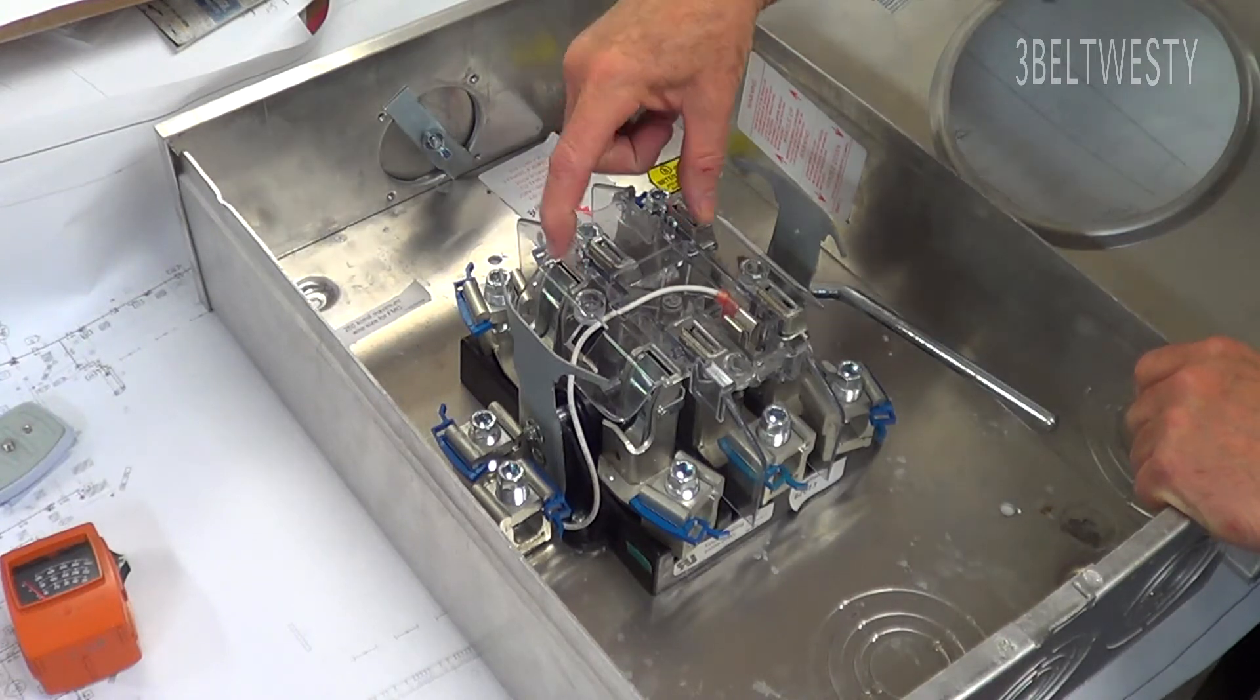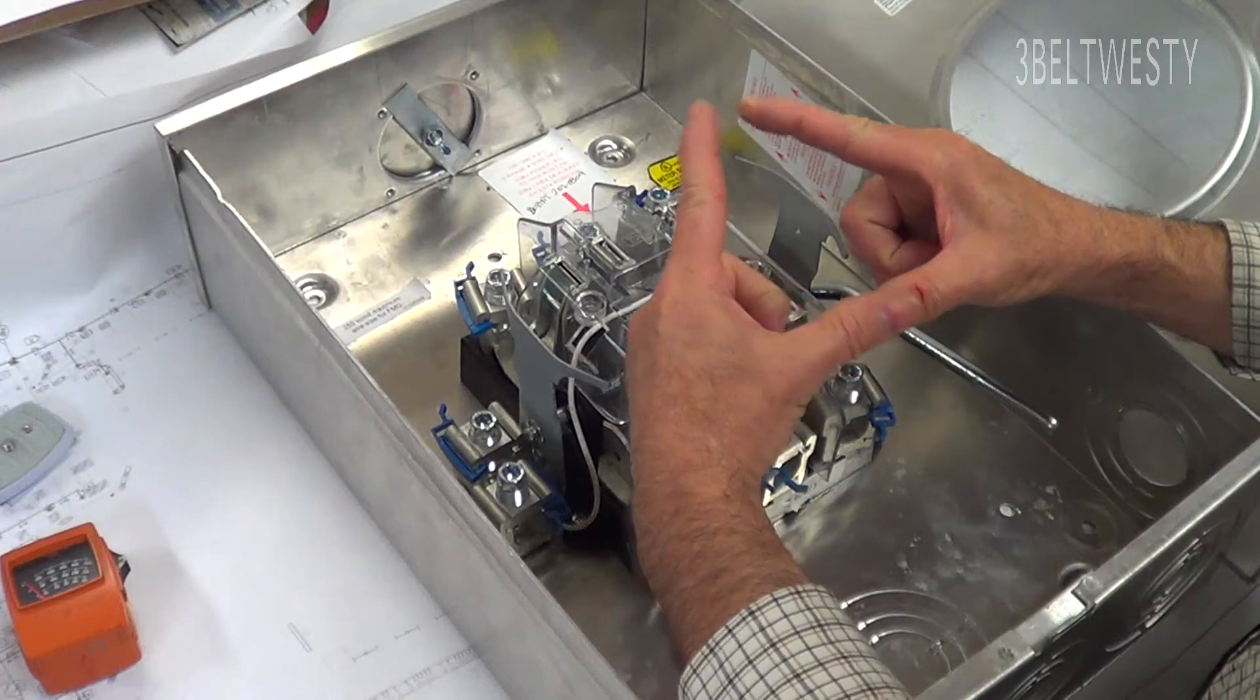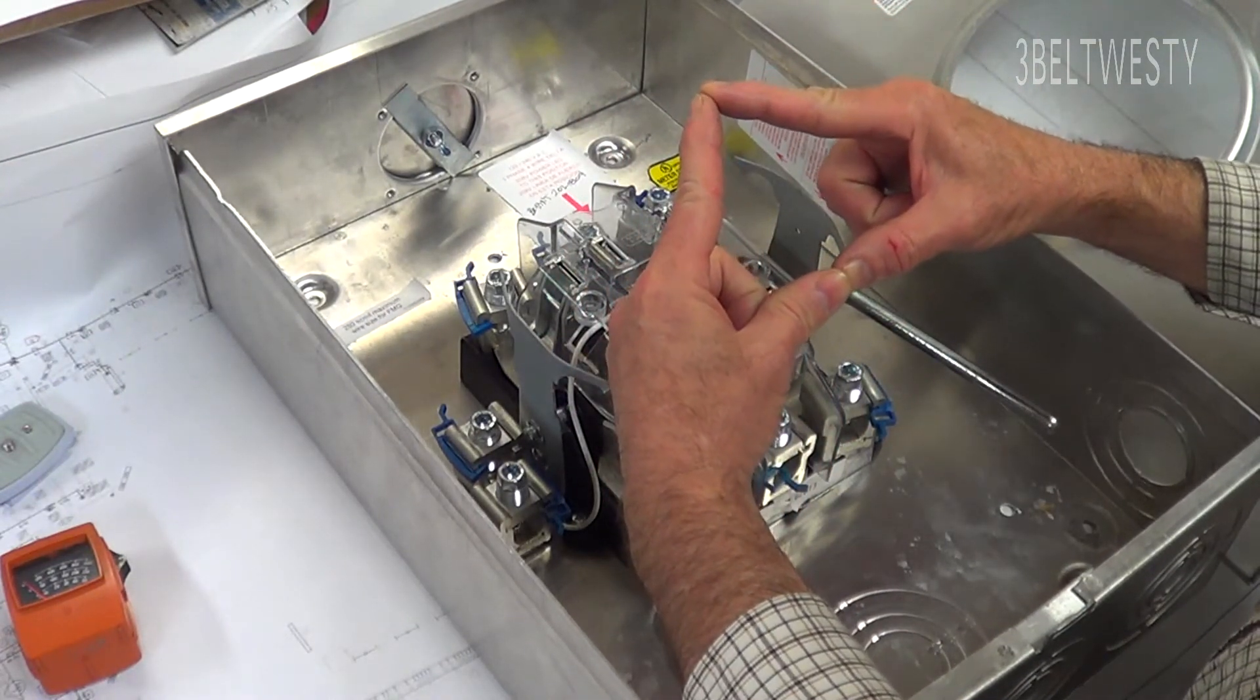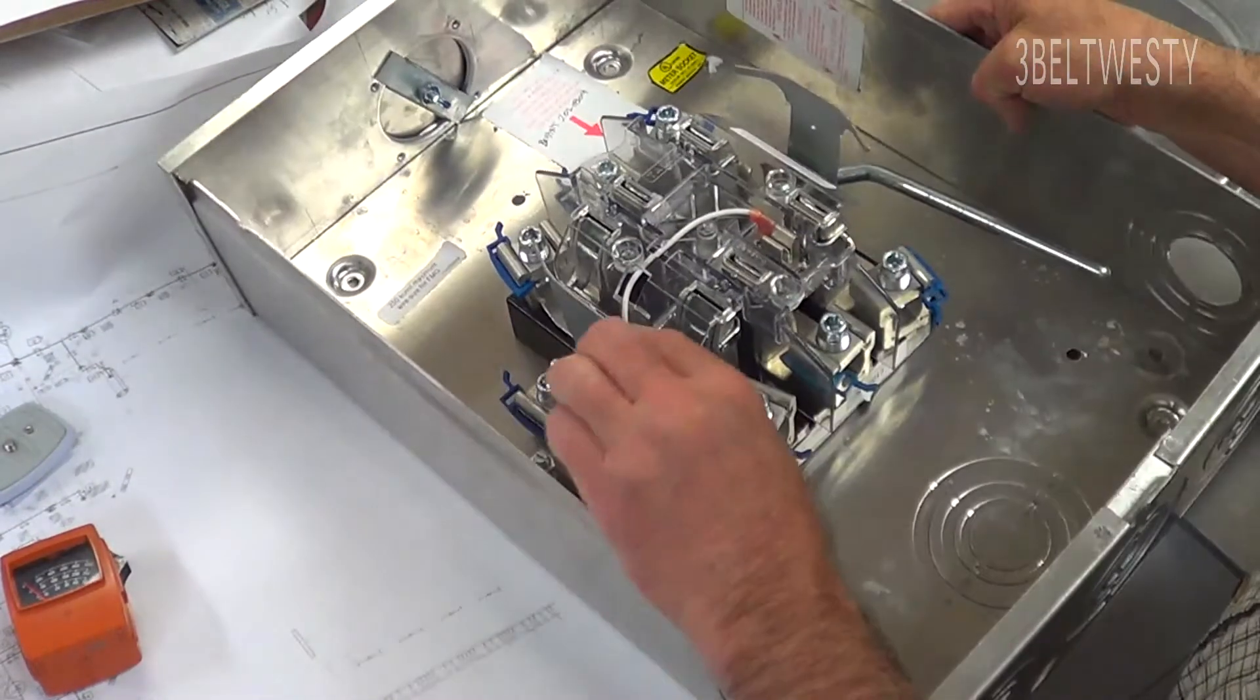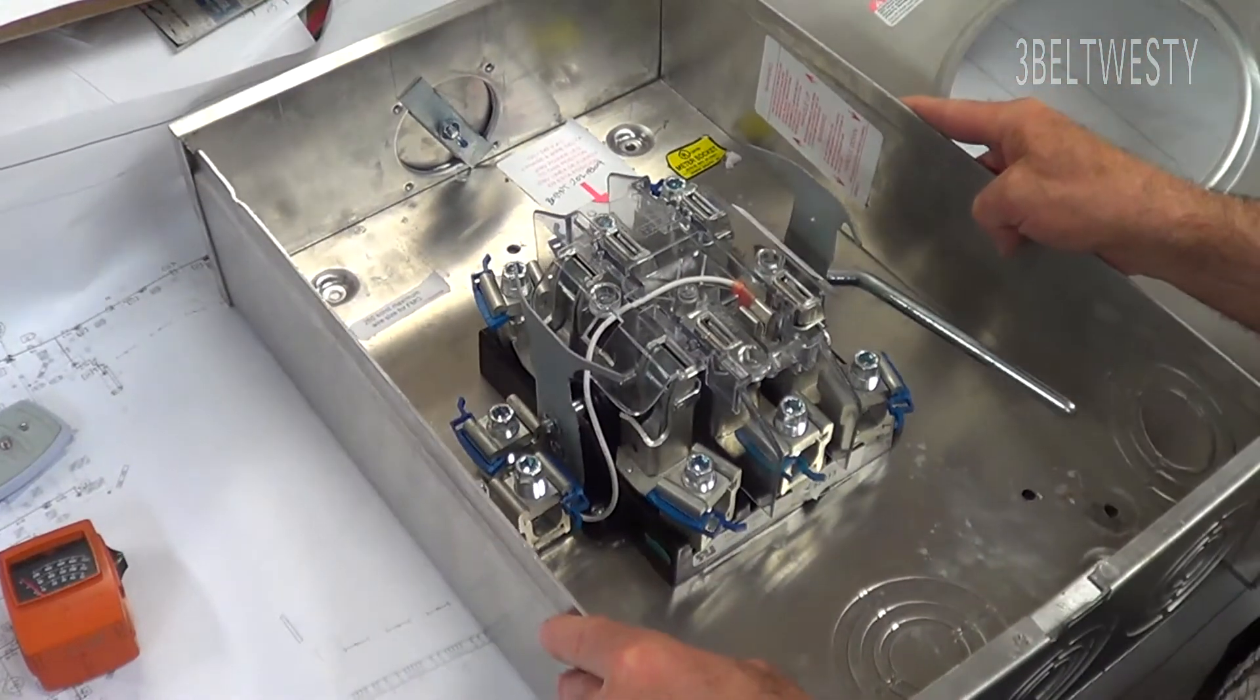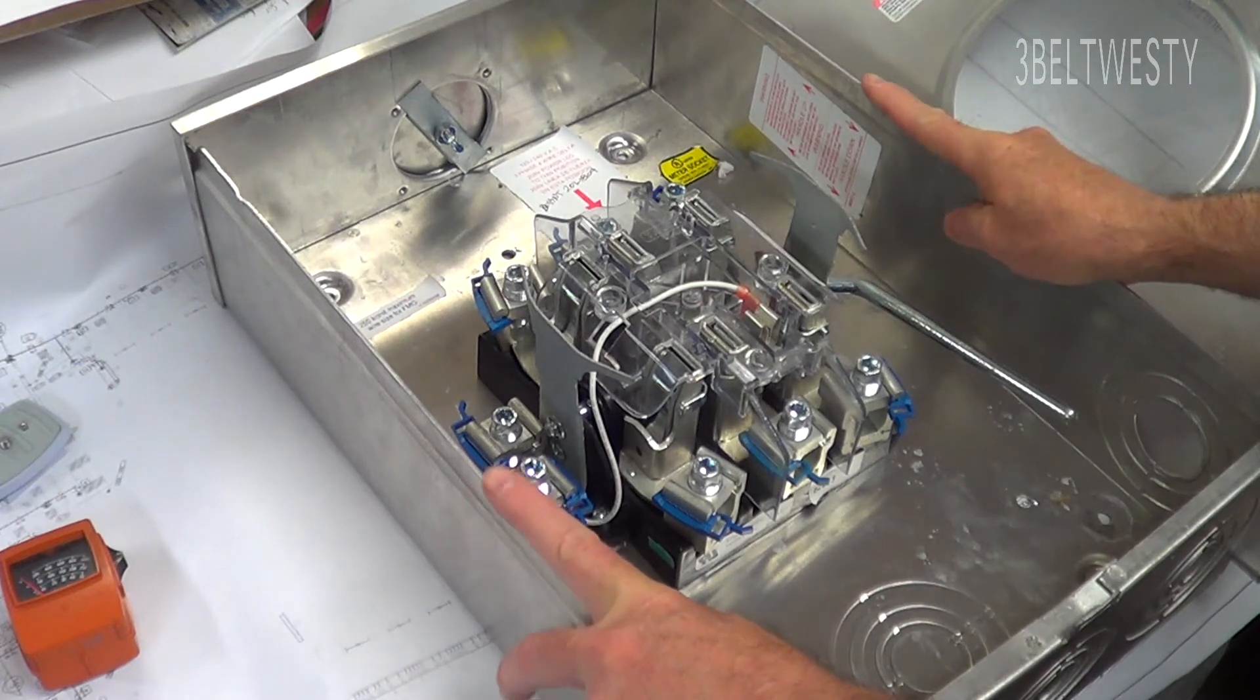So you have 240 across here, 240 across here, 240 across here, which is a delta 240 across it. And then the center point here is the neutral, which is close to ground. And from the neutral to the top point, which is between here and here, is 208 volts. And that's on a three-phase four-wire Delta, which isn't used that much. I actually have one in this building.